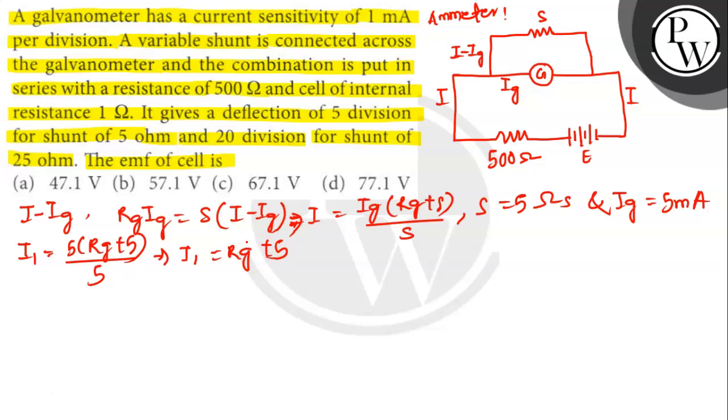Again when the shunt is 25 ohms, deflection in the galvanometer is 20. So S equals 25 ohms.